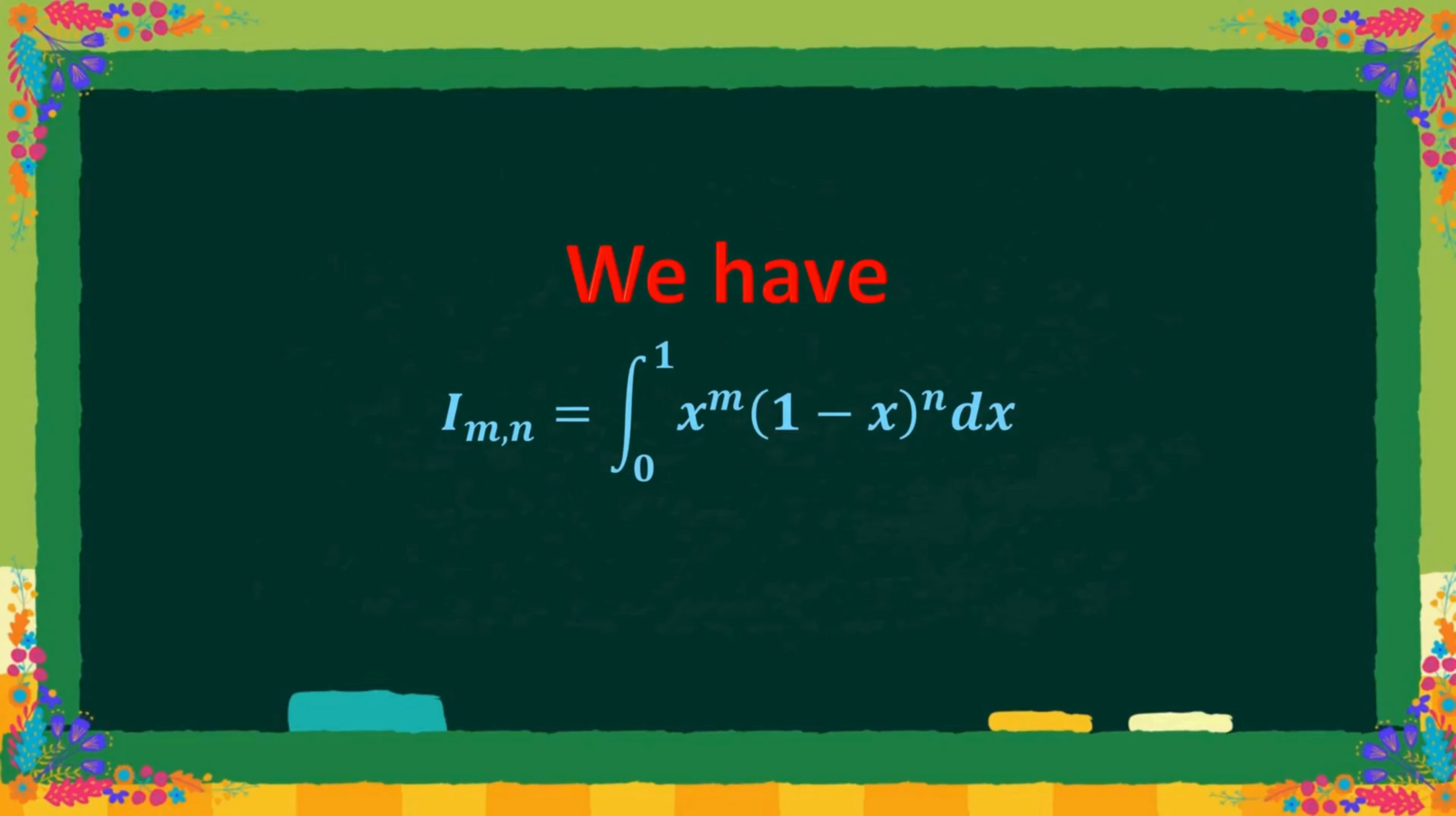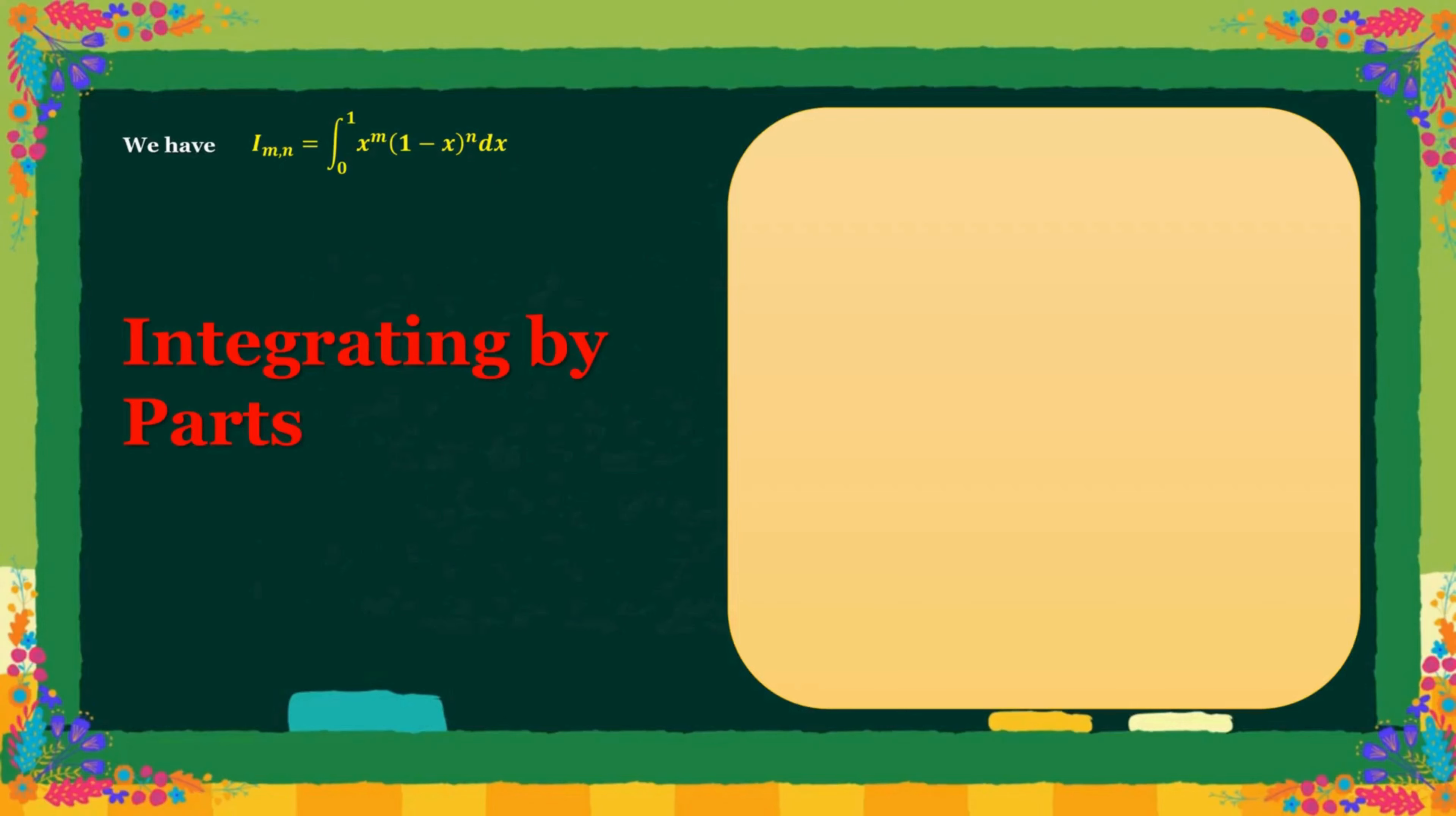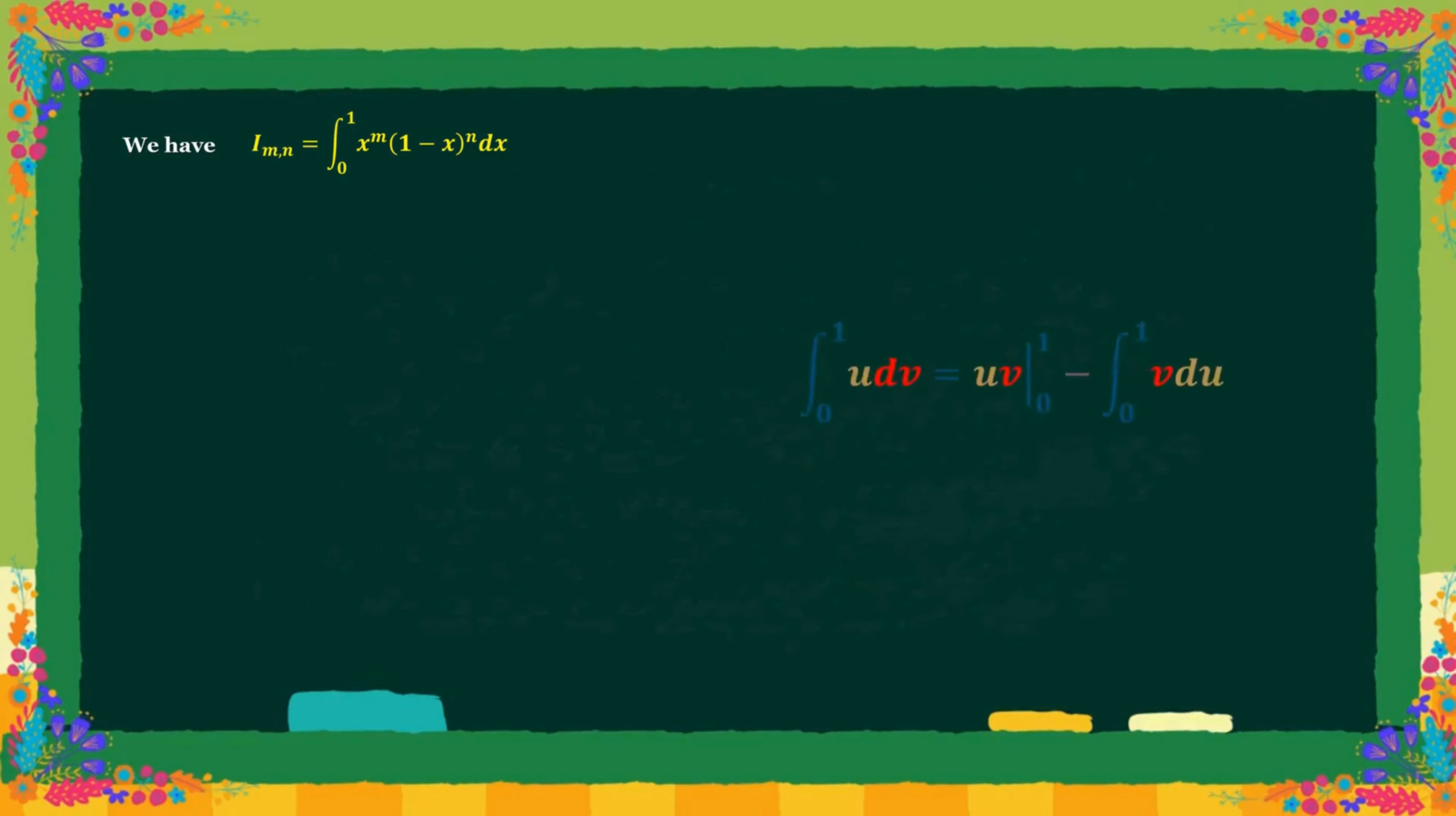So let's start with I m n. To perform integration by parts, we consider 1 minus x to the power n equals u and x to the power m dx equals dv.